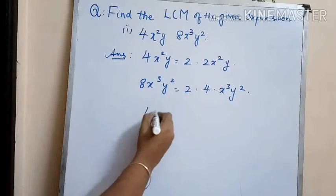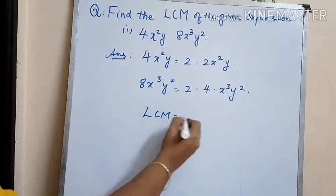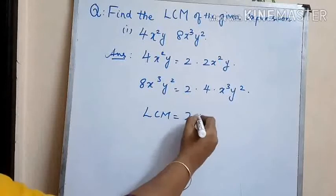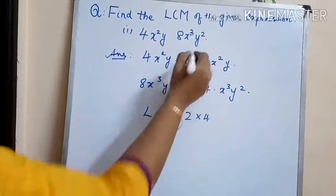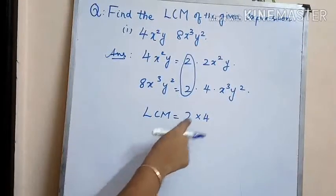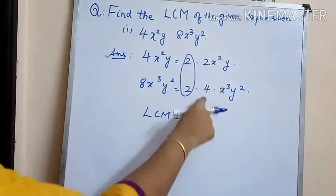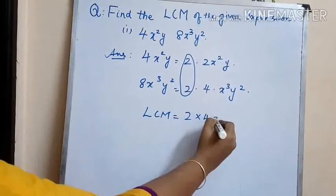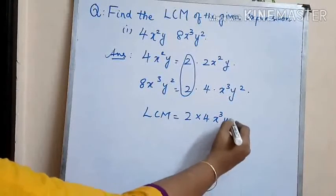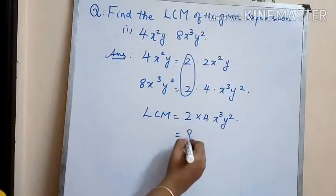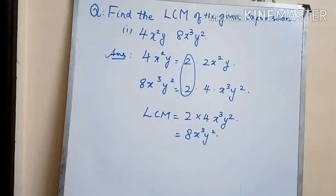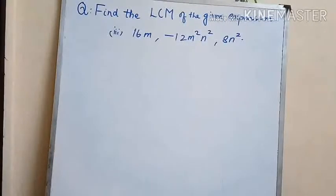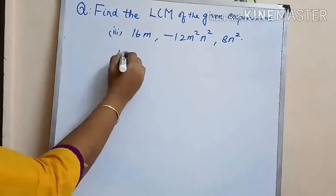Therefore the LCM is: taking the common factor, of 2 and 4 we take 4; of x squared and x cubed we take x cubed; of y and y squared we take y squared. So the LCM is 8x cubed y squared. The next problem is: 16m, minus 12m squared n squared, and 8n squared.